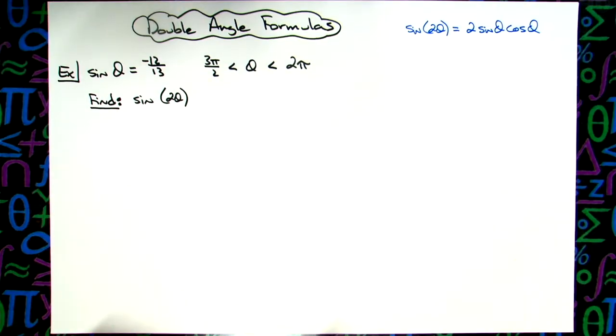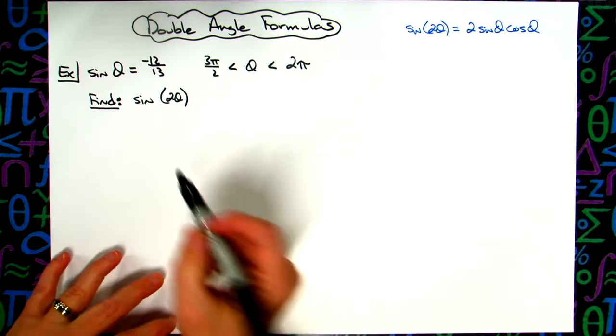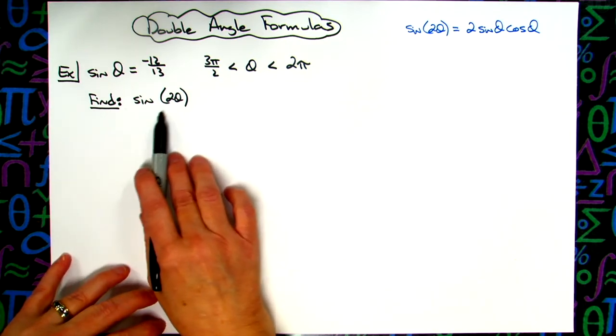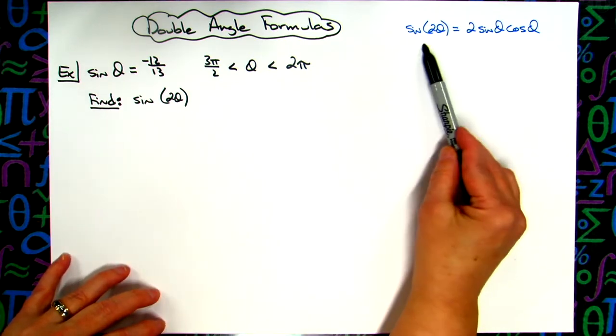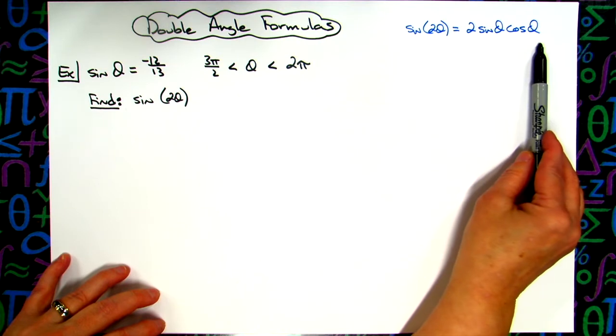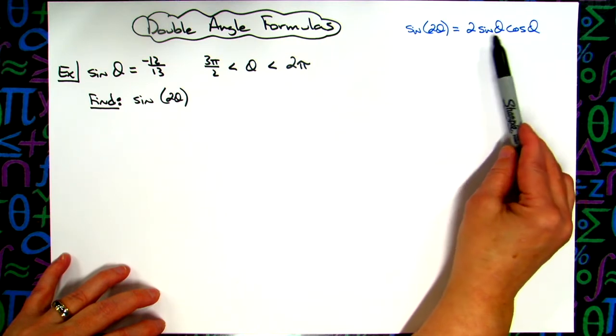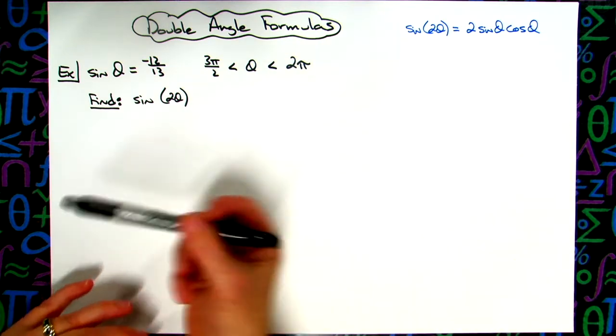Okay, in this video we're going to take a look at a double angle formula. We're going to be trying to find the sine of 2 theta. For reference we have the double angle formula for sine up here in the corner, 2 times sine times cosine.